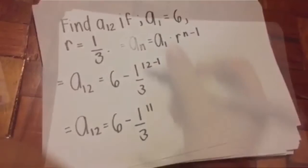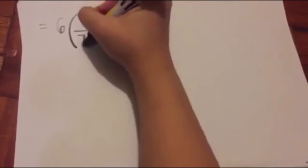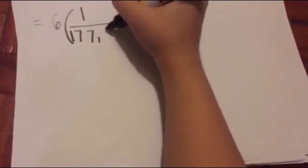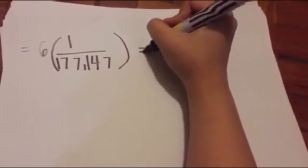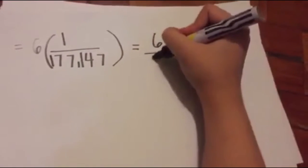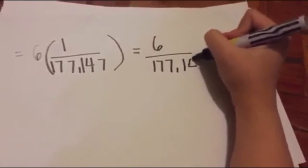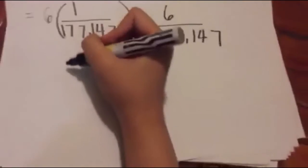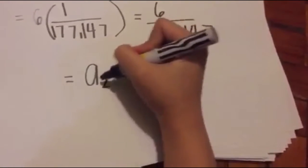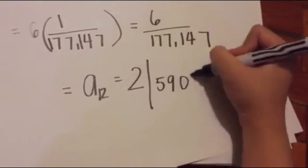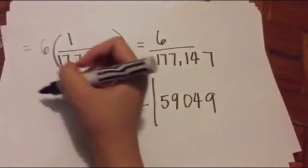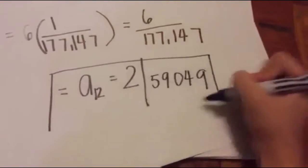Simplifying that, we get 6 times 1 over 177,147. Multiply that and you get 6 over 177,147. Now you divide 6 and your denominator, so a12 equals 2 over 59,049. That is your a12.